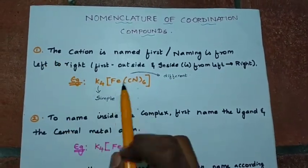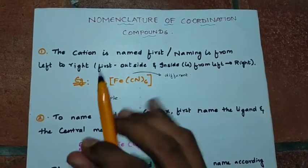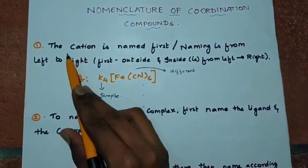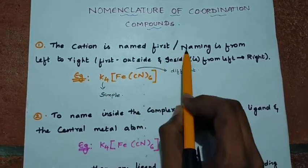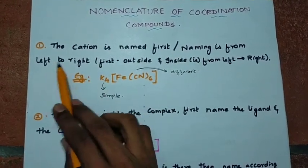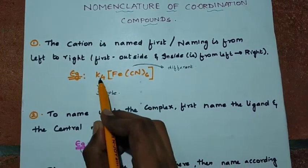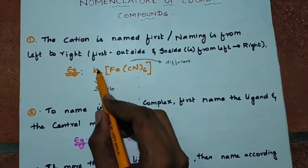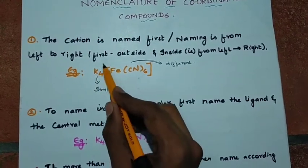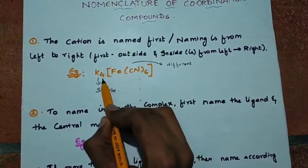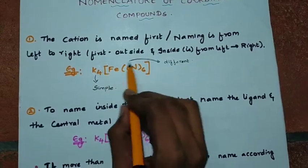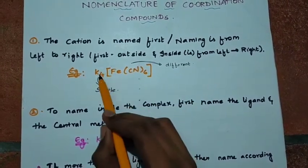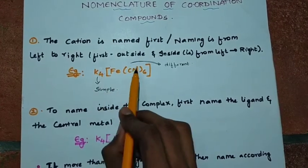So the first rule: for one coordination compound, how you name it — the cation is named first. The naming is from left to right. For example, here we have K4[Fe(CN)6]. The naming starts from the left side first, then you go to the right. That is how you name it.